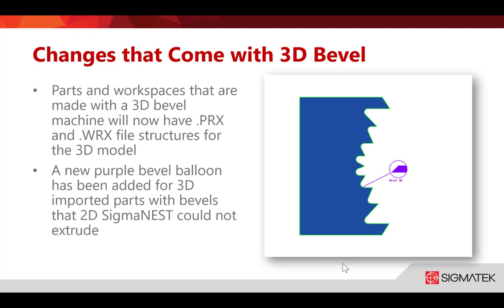A new purple bevel balloon has been added for 3D importer parts with bevels that 2D SigmaNest cannot extrude. On a jagged tooth part with a very complex contour, the bevel balloon will be purple. If SigmaNest can extrude a normal bevel — for example, a top knife on straight cuts — that would show as the traditional yellow or orange balloon you're used to seeing. We'll go into the software to take a look.